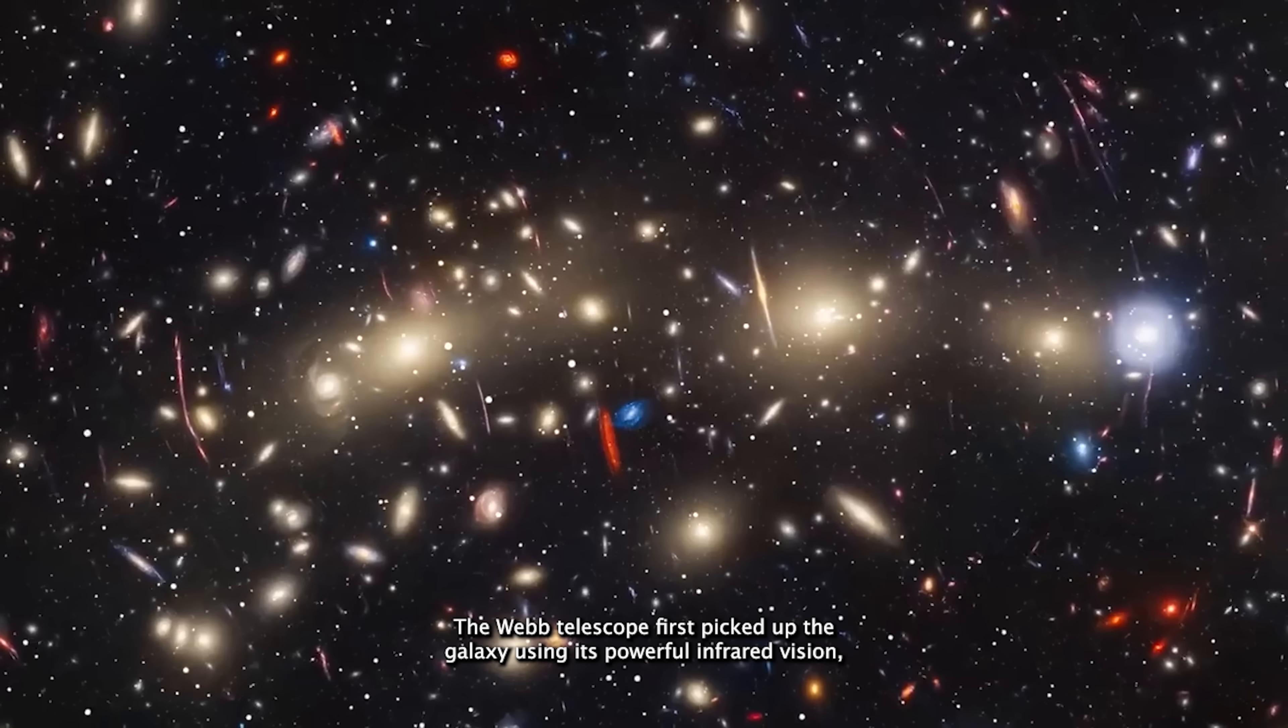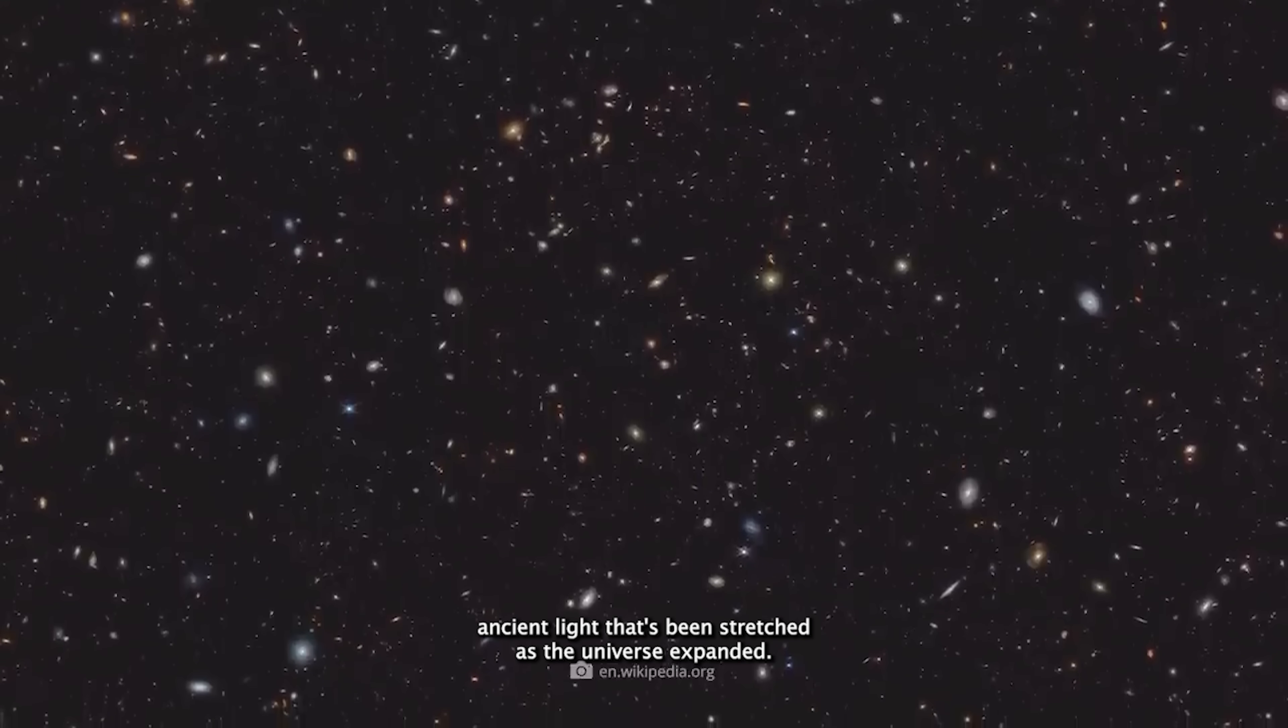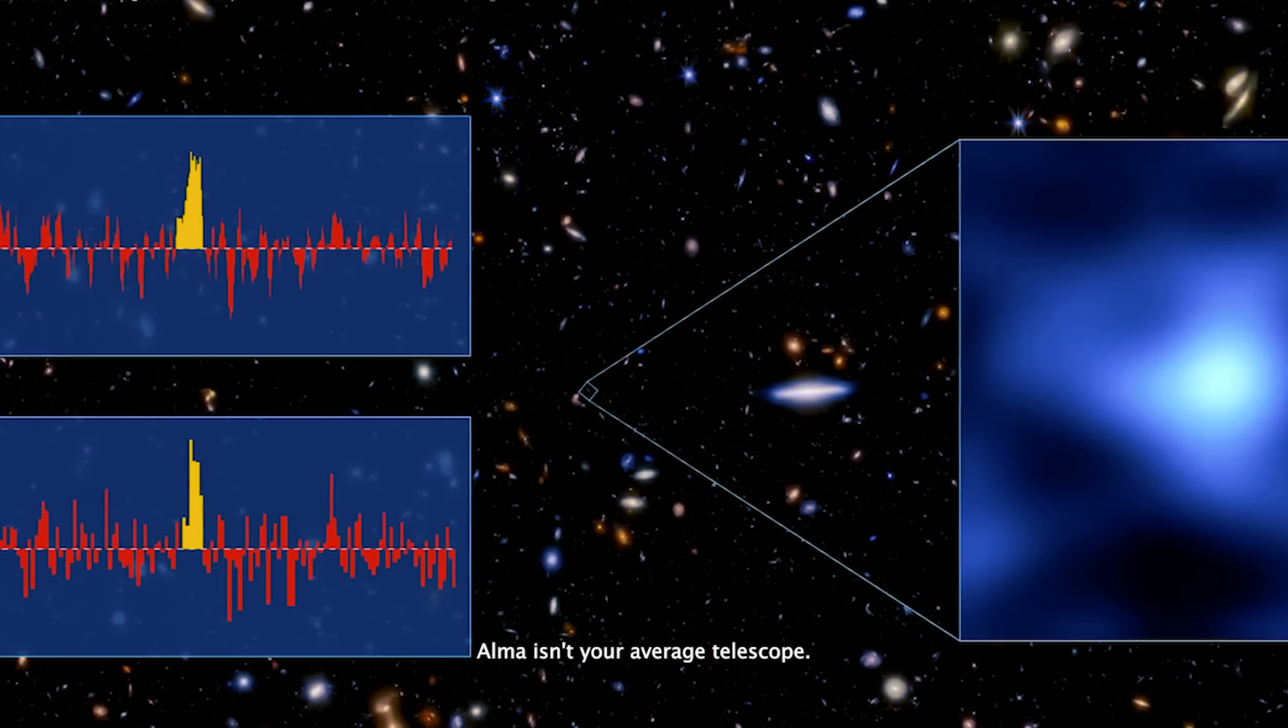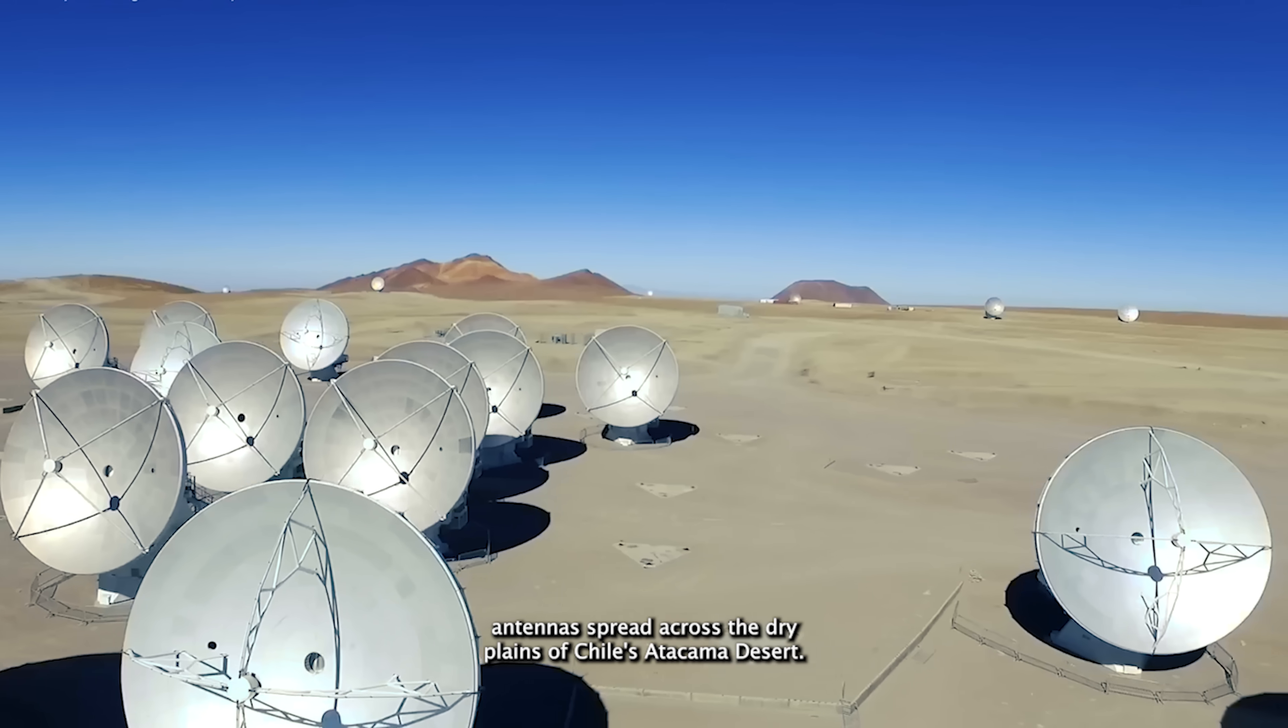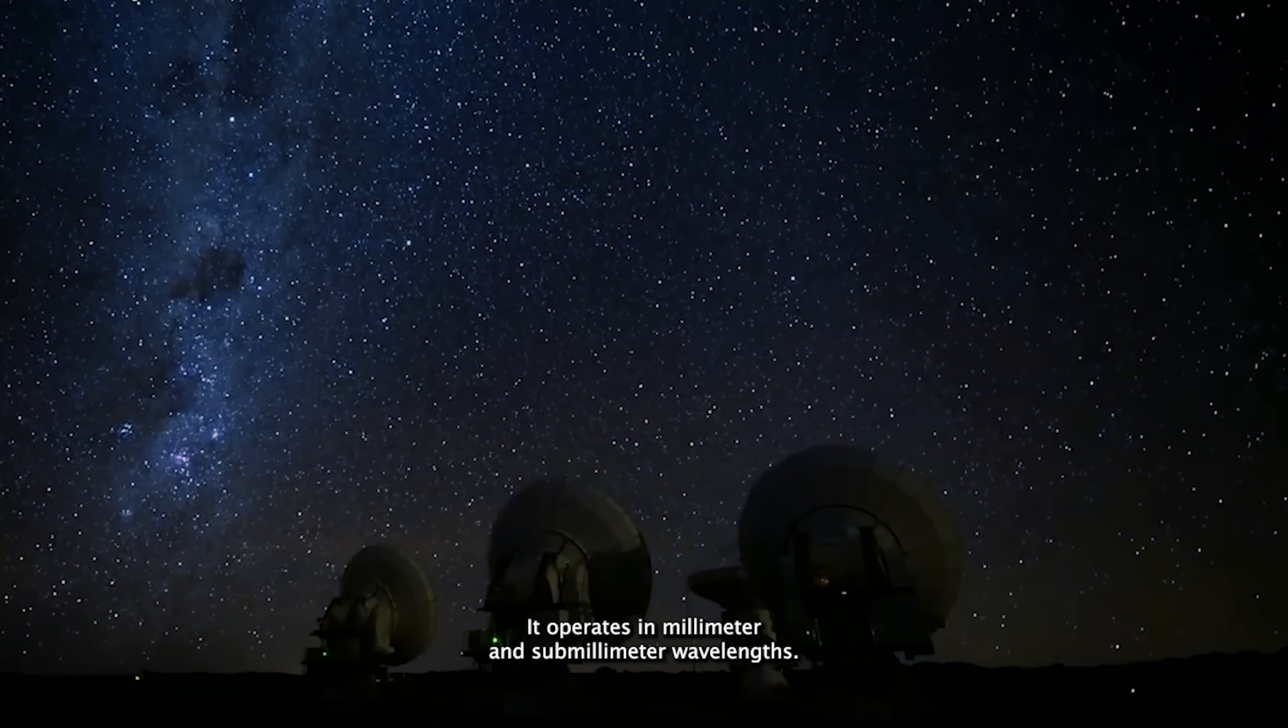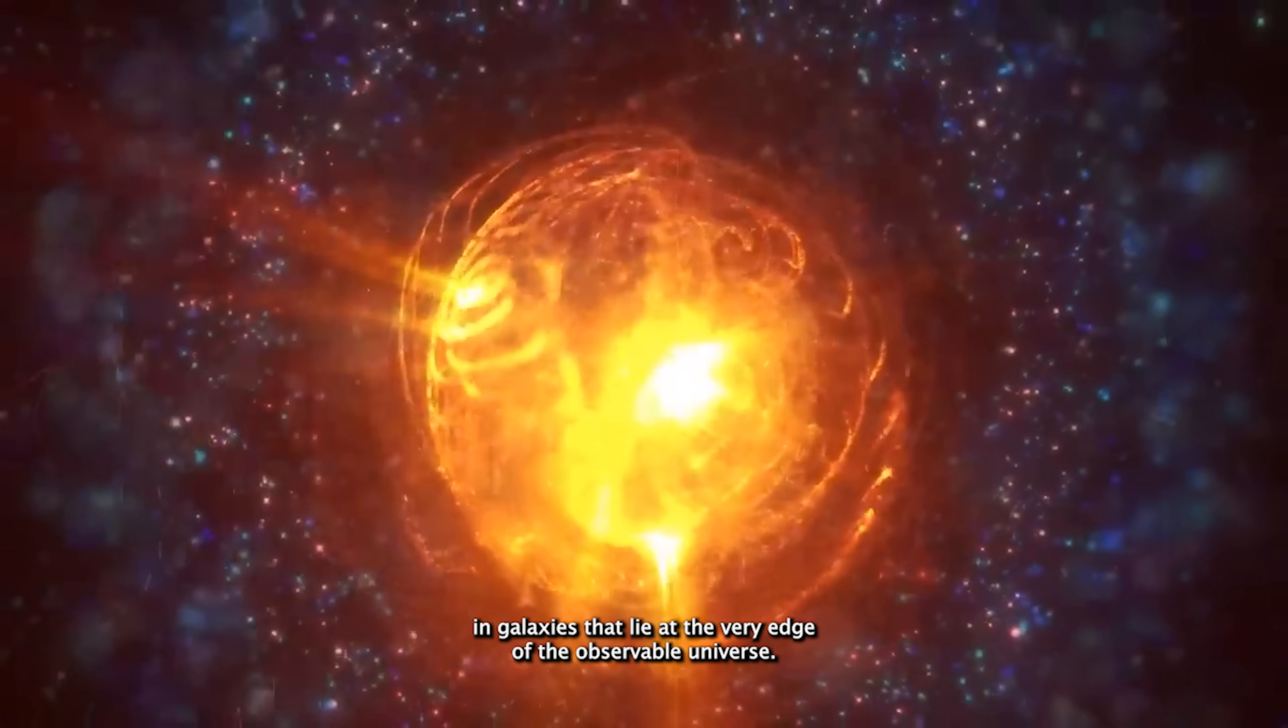The Webb telescope first picked up the galaxy using its powerful infrared vision, which can cut through cosmic dust and spot ancient light that's been stretched as the universe expanded. But it was ALMA that made the real headline, the discovery of oxygen. ALMA isn't your average telescope. It's a massive network of 66 ultra-precise antennas spread across the dry plains of Chile's Atacama Desert, all working together like one super sensitive eye. It operates in millimeter and submillimeter wavelengths, exactly the sweet spot for detecting faint signals from elements like oxygen in galaxies that lie at the very edge of the observable universe.